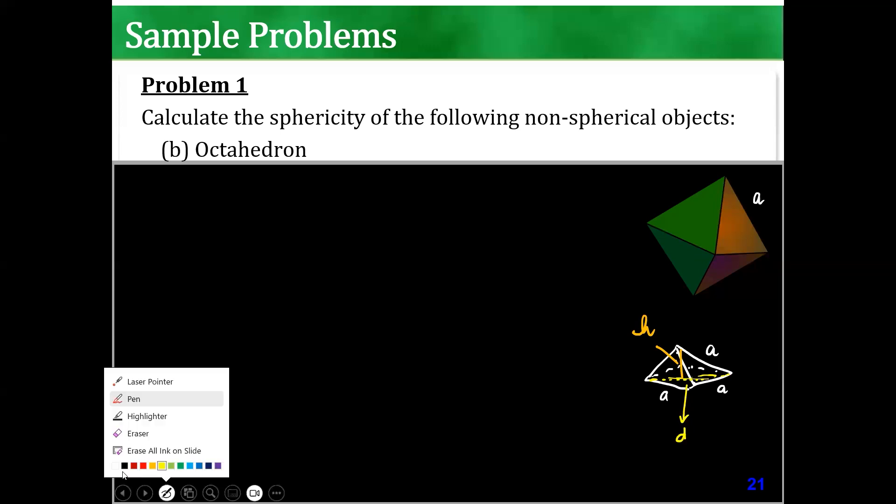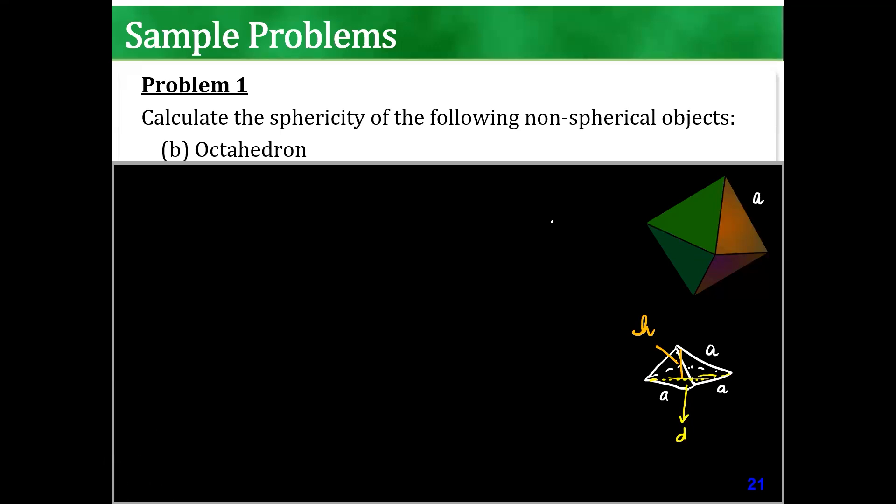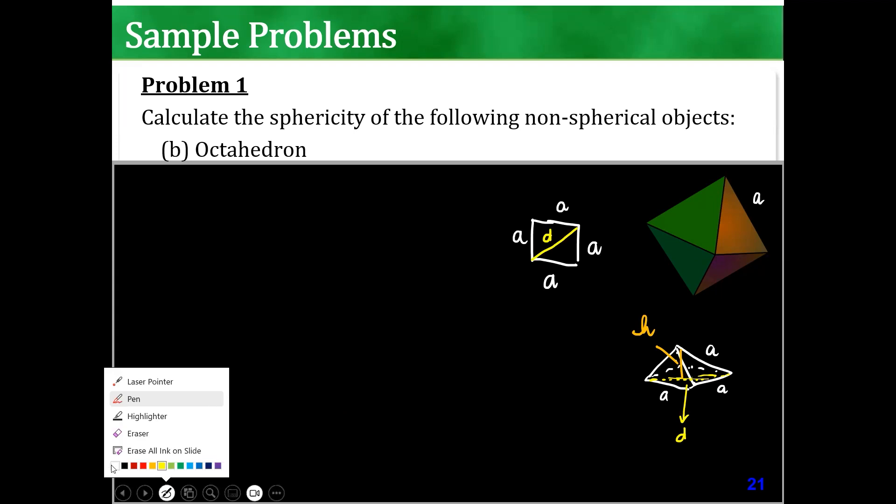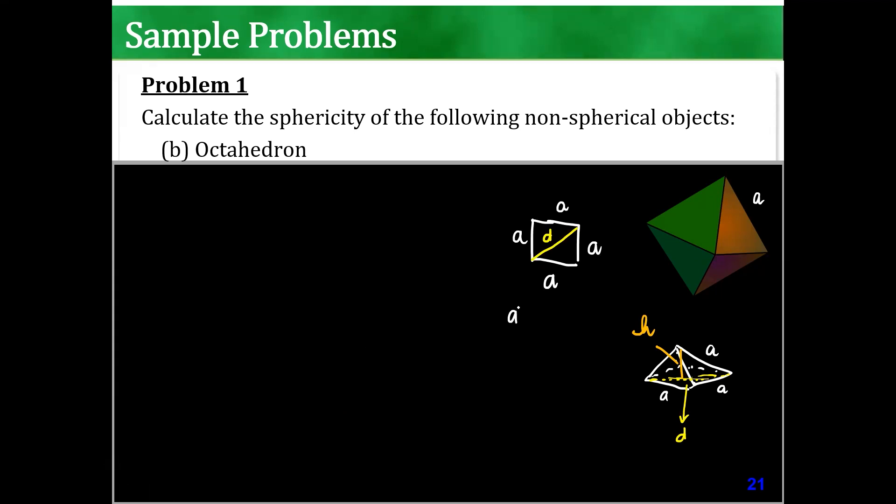So, in order to get that diagonal, I can draw the square base at the bottom. If this is a, that's a, this is a, this is a, the diagonal would be this one. That's d. So my d, a squared plus a squared is d squared. Therefore, d is a square root of 2. Can you follow, guys?